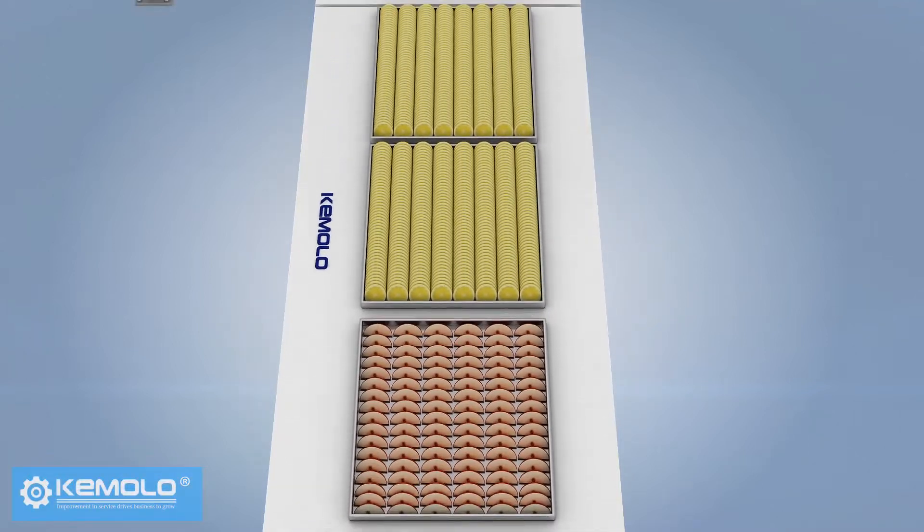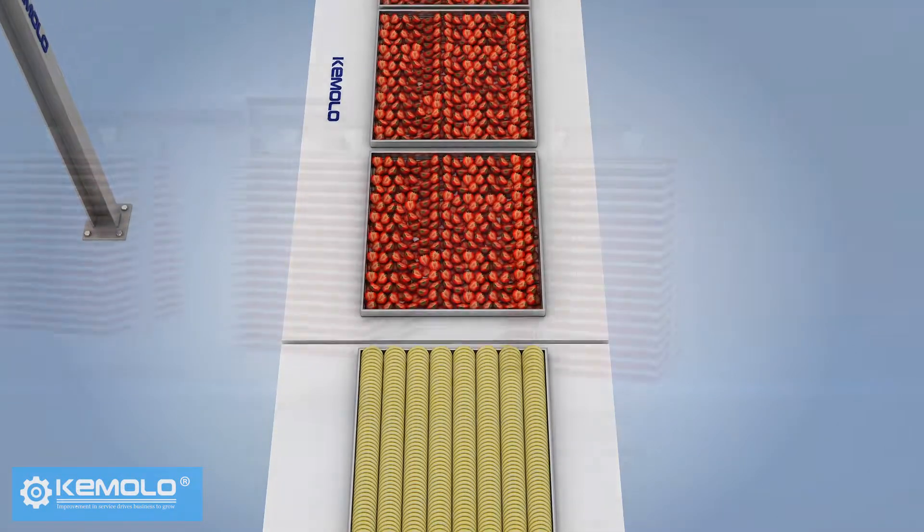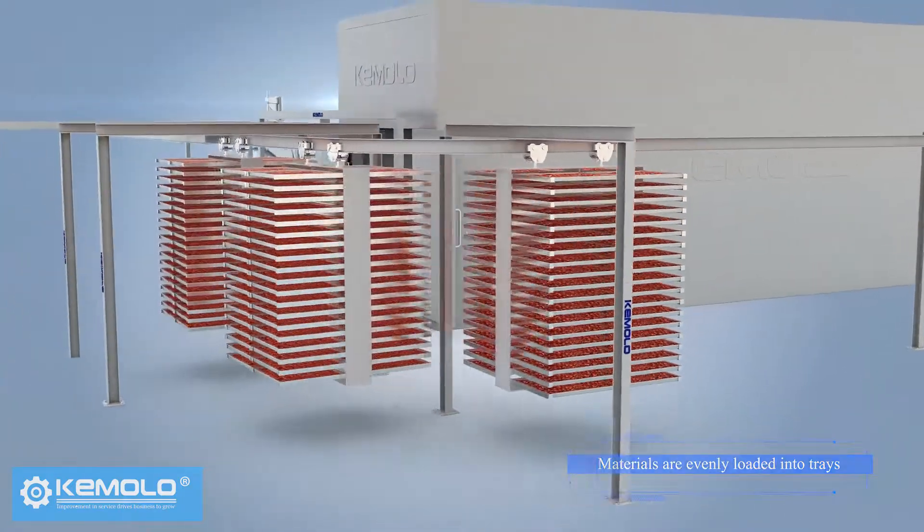First, wash and slice the fruits, vegetables, or other pre-processed materials evenly and load them into product trays.